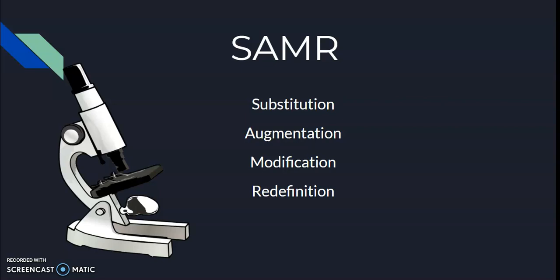Augmentation is changing the technology with a functional improvement. When students are creating their one-page summary, I would allow them to use spellcheck or grammar applications to help make sure they were writing properly with correct grammar. Modification is changing the technology but incorporating different aspects to improve the assignment — so maybe I would let the kids get into groups, create their one-page summaries together, and do peer review. That incorporates collaboration.